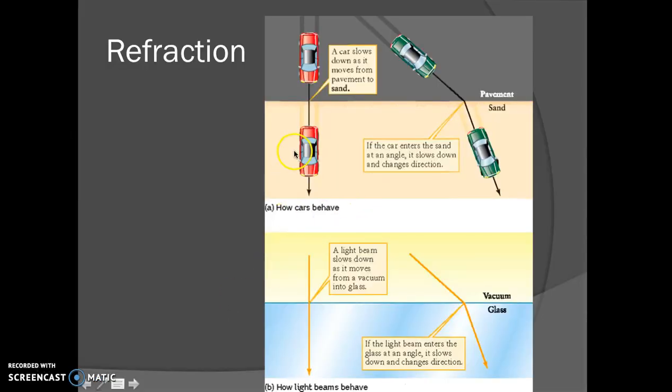Here's another good example of refraction. If we have a light wave go straight through, it won't bend, but it does slow down. But if a light beam comes in at an angle, it enters the glass at an angle, it slows down and it changes direction. That's what's happening when we have light entering our lenses through our refracting telescopes.